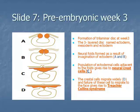Item 4: a population of ectodermal cells adjacent to the neural folds, not included in the overlying surface ectoderm — i.e., the somatic ectoderm — gives rise to the formation of the neural crest.